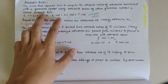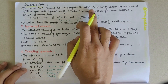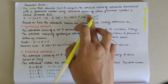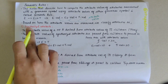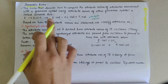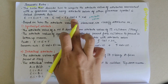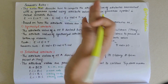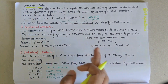Now let's look into semantic rules. The rules that describe how to compute the attribute values of attributes associated with a grammar symbol using attribute values of other grammar symbols are called semantic rules. For example, for production E → E1 + T, the semantic rule is E.val = E1.val + T.val. The values of these two grammar symbols are added, and val here are the attribute symbols.